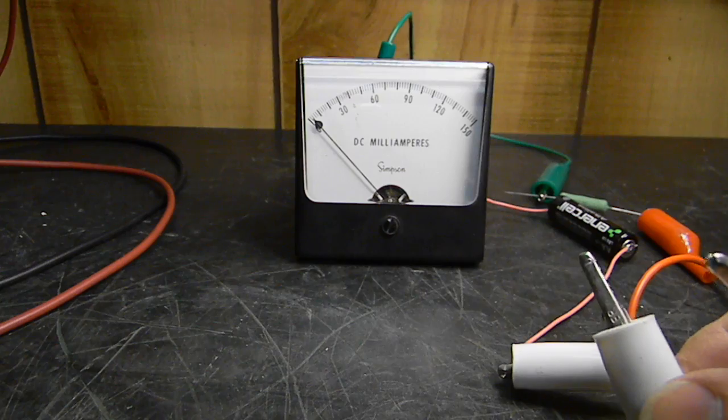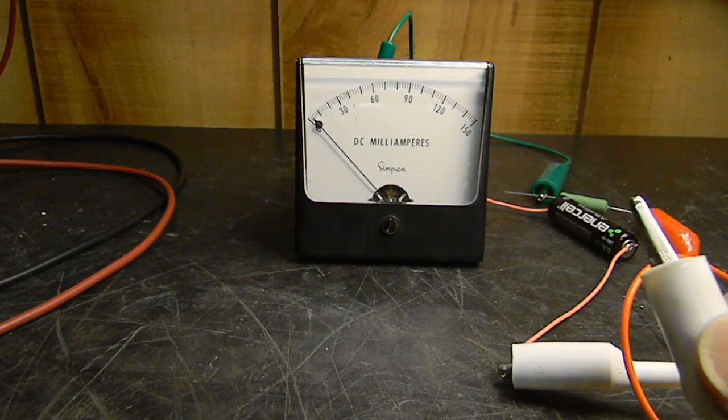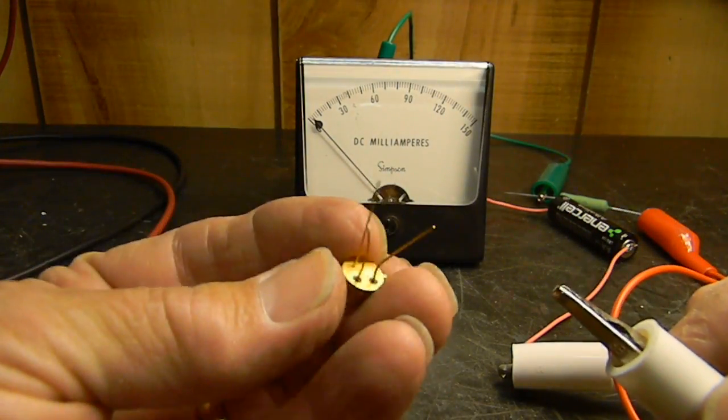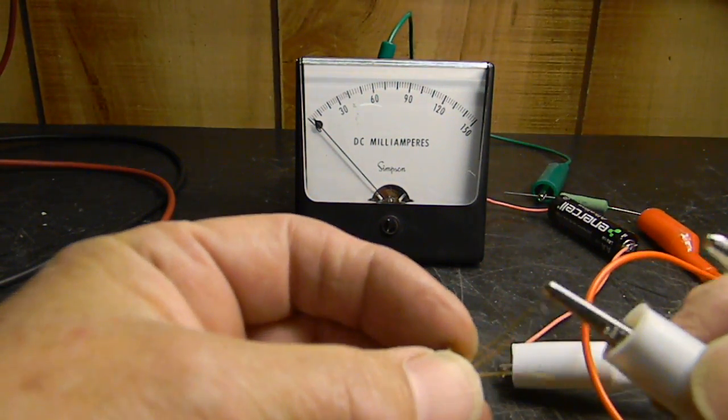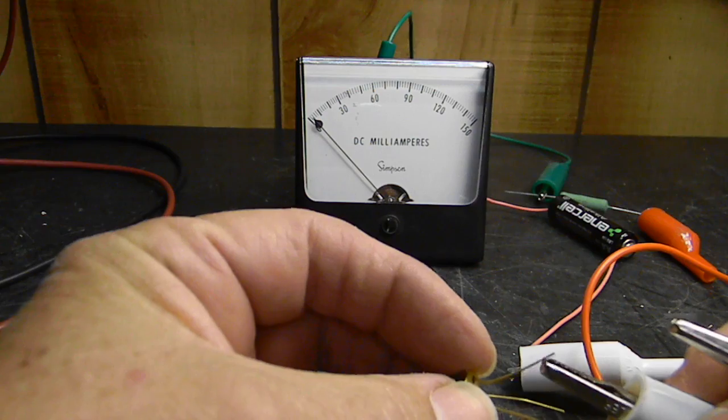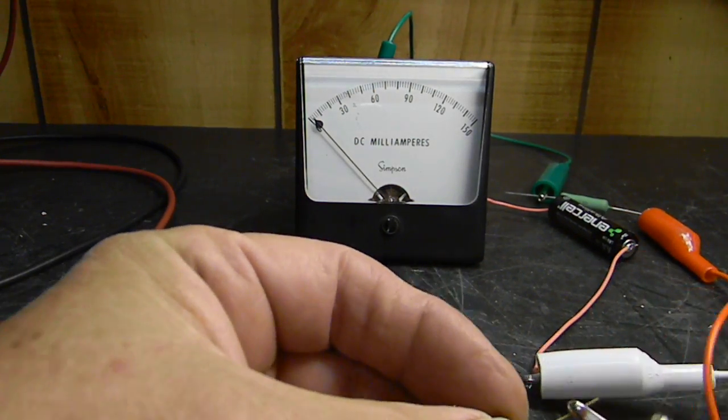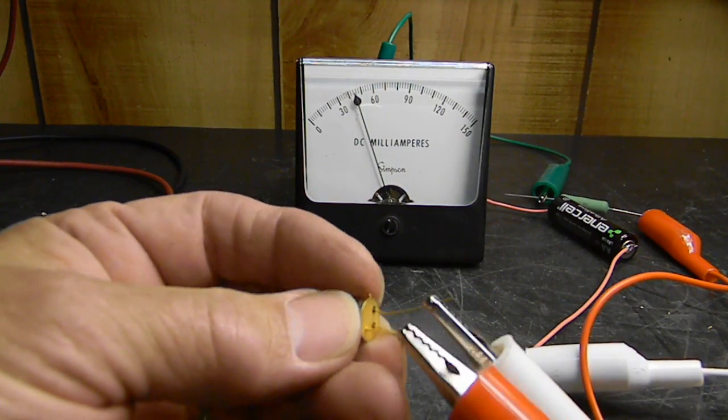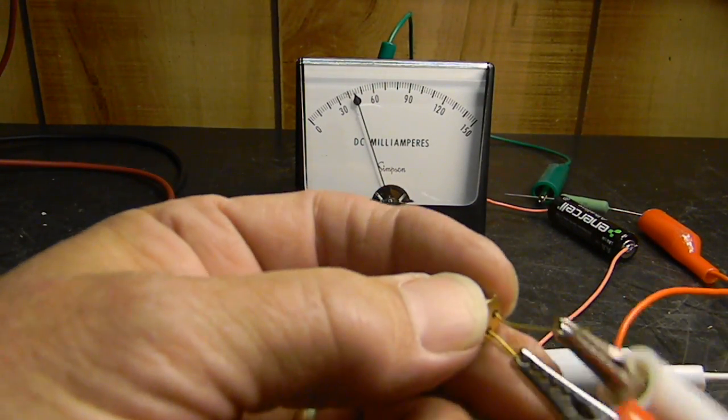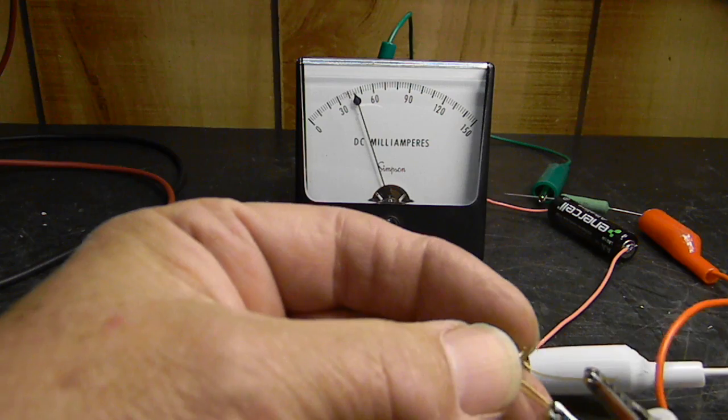Here we go again. Here's the cathode over here, and then you hook the anode up here. Look, that one's on all the time. That SCR is shorted. You can touch it if you want to over there, but that SCR is shorted and it's bad.